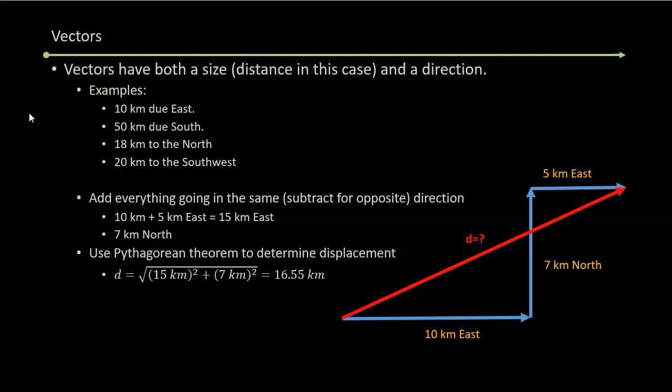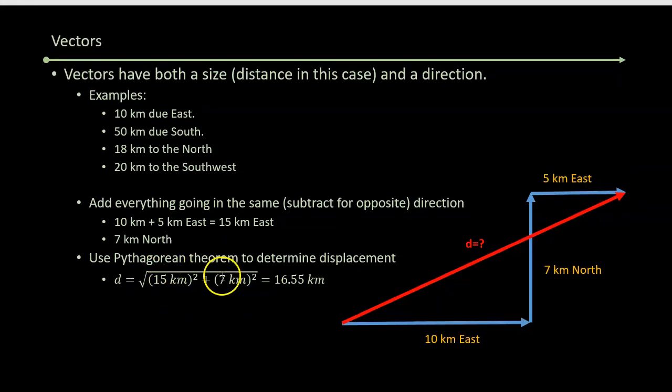When you're adding vectors, you add everything that's going in the same direction or subtract if it's going in the opposite direction. So in this little sketch, we have 10 kilometers plus 5 kilometers to the east. We have 7 kilometers to the north. Now, you don't just add those together. If you did that, you'd get the path distance, not the displacement. For the displacement, you have to use the Pythagorean theorem, so the displacement is your total displacement to the east, squared, plus your total displacement to the north, squared, and you take the square root.